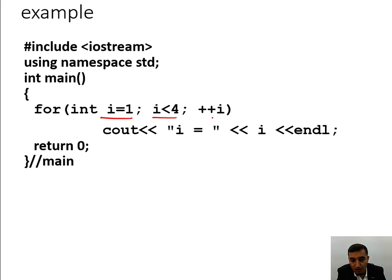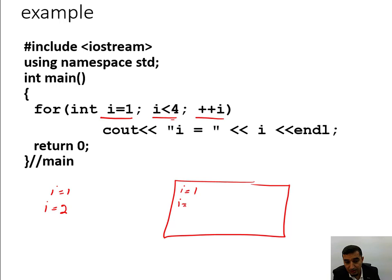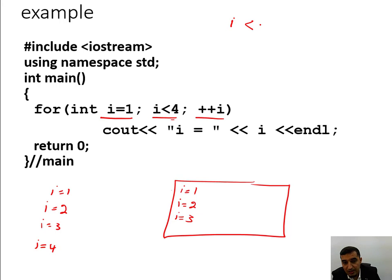Another example: 'for (int i = 1; i < 4; ++i) cout << "i = " << i;'. Start at i=1; is 1 < 4? Yes — display i=1. Increment; i=2, display i=2. Increment; i=3, display i=3. Increment; i=4; is 4 < 4? No — exit. Note that 'i <= 3' and 'i < 4' are equivalent conditions and give the same output.